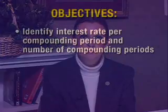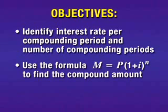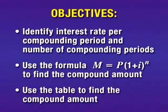The topics we will cover are: we will identify interest rate per compounding period and number of compounding periods. We will use the formula M = P(1+i)^n to find the compound amount. We will also use the table to find the compound amount.